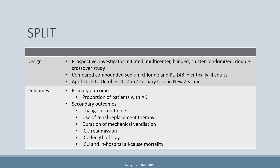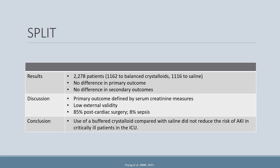They enrolled patients between April 2014 and October 2014 in four tertiary ICUs in New Zealand. Their primary outcome was the proportion of patients with AKI. Secondary outcomes included change in creatinine, use of renal replacement therapy, duration of mechanical ventilation, ICU readmission, ICU length of stay, and ICU and in-hospital all-cause mortality. They enrolled 2,278 patients — 1,162 receiving a balanced crystalloid and 1,116 receiving saline.